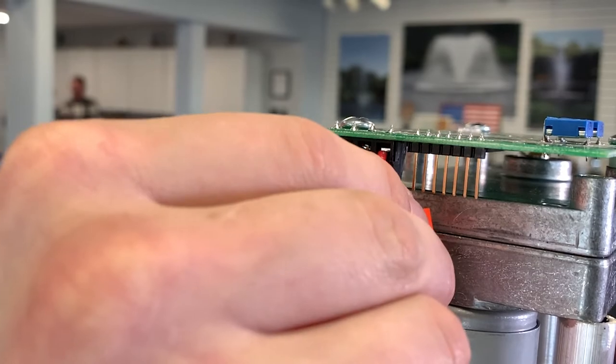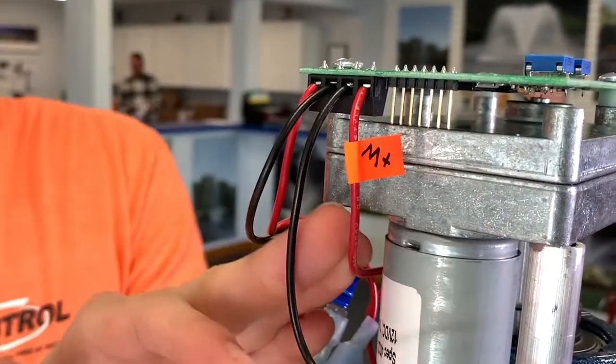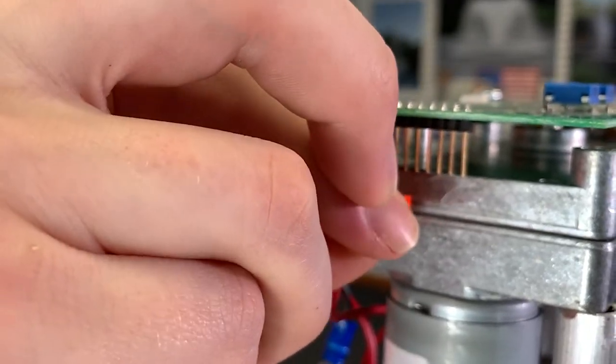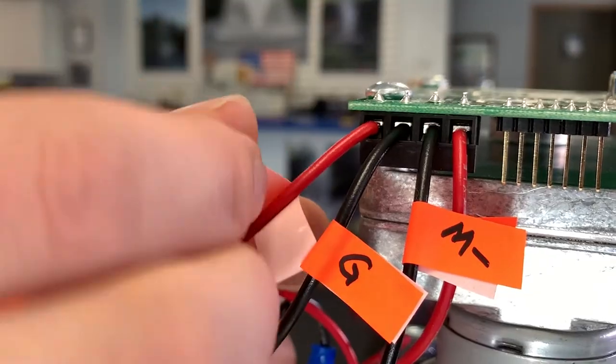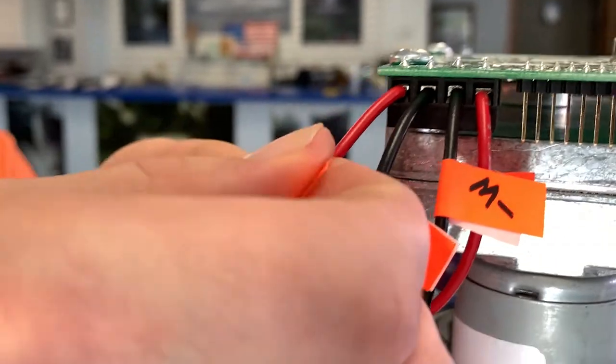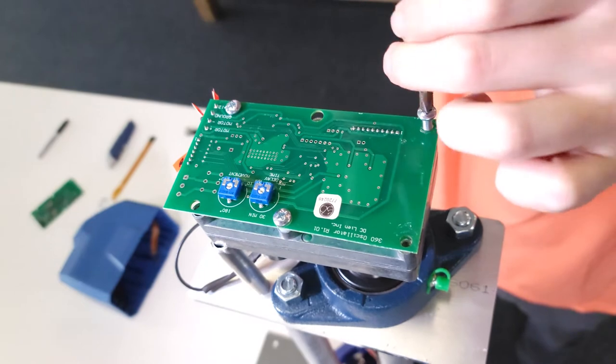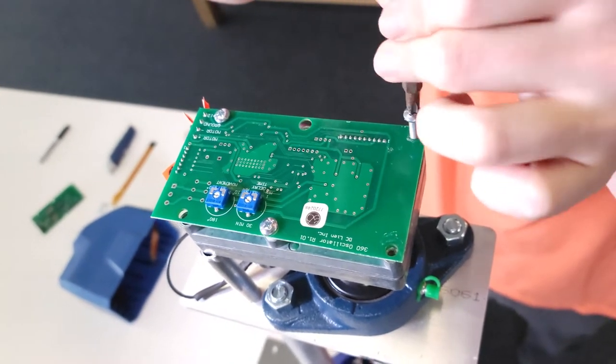Mark each wire with labels or tape to ensure proper alignment with the replacement circuit board. Use a number two Phillips screwdriver to remove the three mounting screws on the top side of the circuit board.